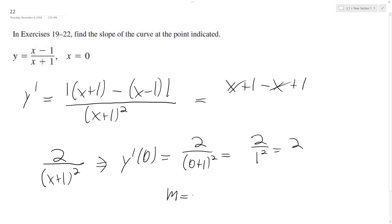So our slope in this instance at the point x equals 0 is just 2. And that's it. All right, I hope this helps you out. Thanks for watching. Have a great day.